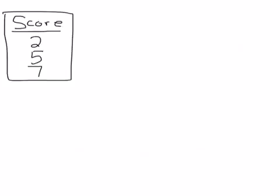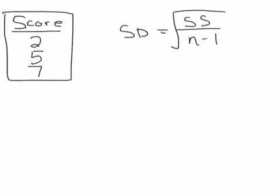First and foremost, when I'm looking for standard deviation, I immediately want to write down how do I get a standard deviation? What is the notation and what is the equation? So I'm going to use the SD notation, and our equation is sum of squares over n minus 1, and we take the square root of that.